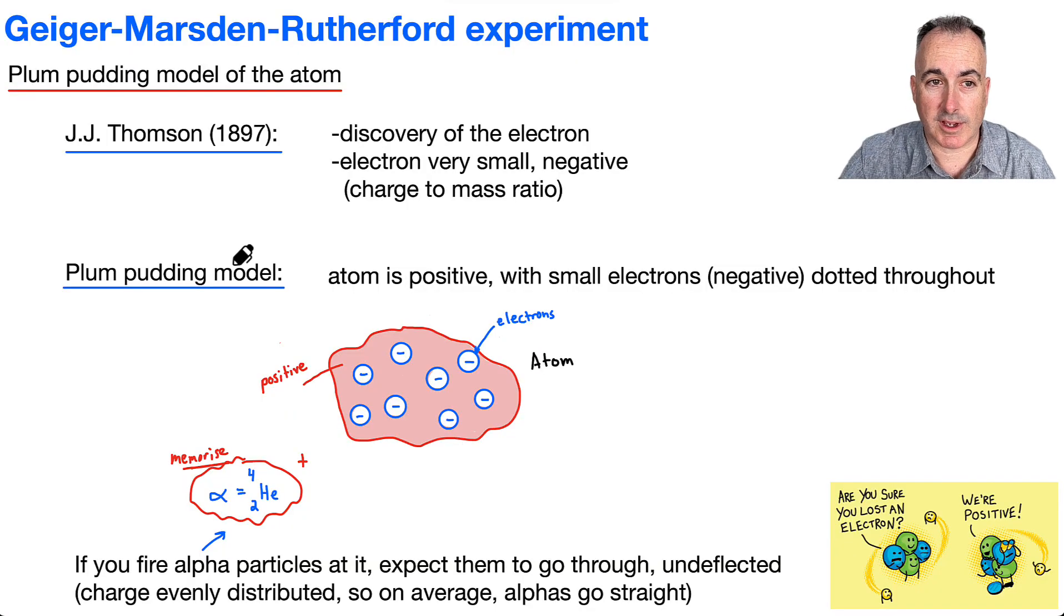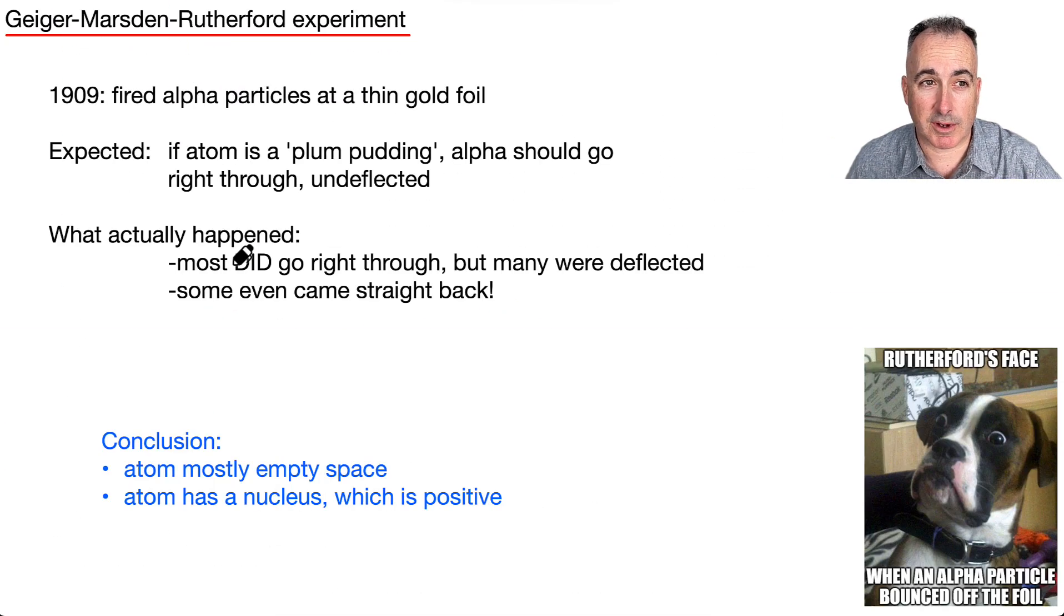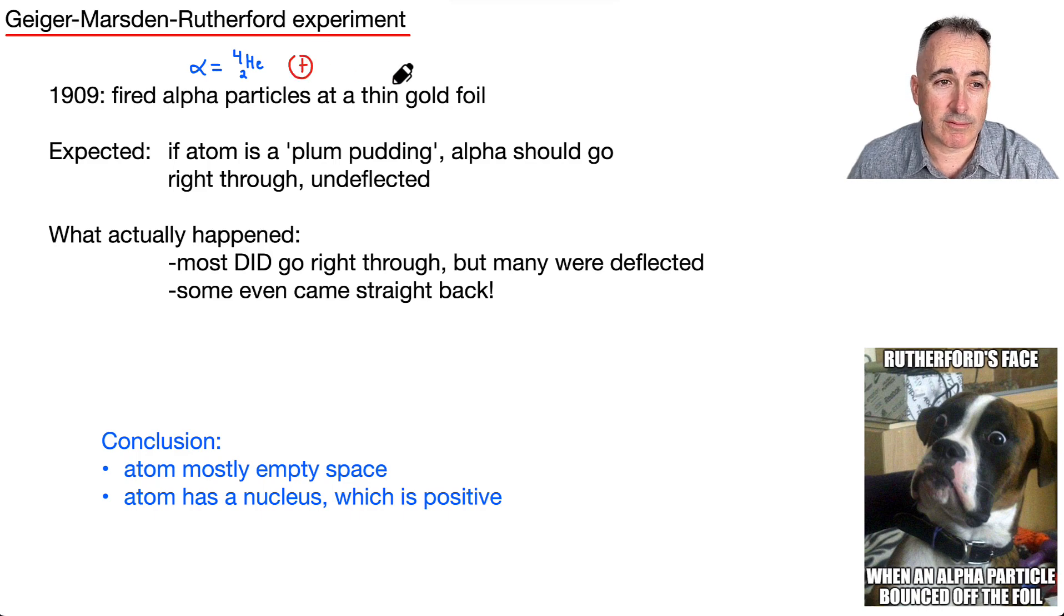Of course, that's not what actually happened. In their experiment, Geiger, Marsden, and Rutherford in 1909 fired alpha particles—remember, alpha is helium-4—these positive particles at a thin gold foil. They expected, if the atom is a plum pudding, they should just go right through undeflected. But what actually happened?